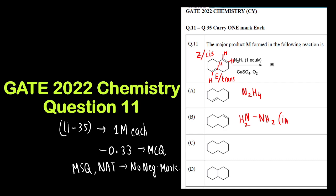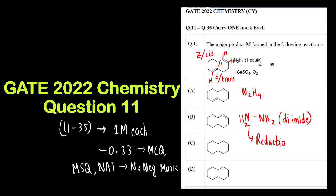We have to react with N2H4. What is N2H4? The structure is NH2-NH2. The name of this reagent is diimide. It is a reducing agent used for the reduction of compounds having multiple bonds like alkynes, alkenes, or allenes.